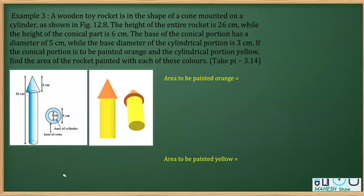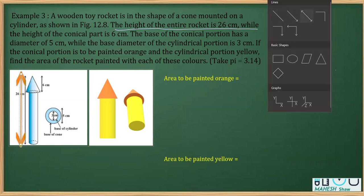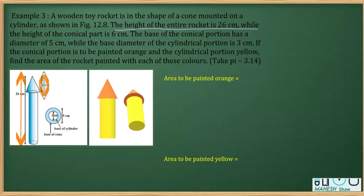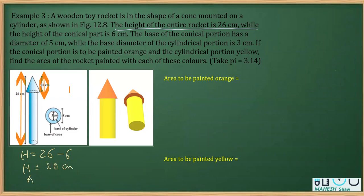Reading further, it says that the height of the entire rocket is 26 cm. Looking into the figure, the entire rocket height is 26 and the height of the conical portion is 6 cm. So the height of the cylindrical portion is 26 minus 6, which is 20 cm. We use capital H for the cylinder height and small h for the cone height, which is 6 cm.